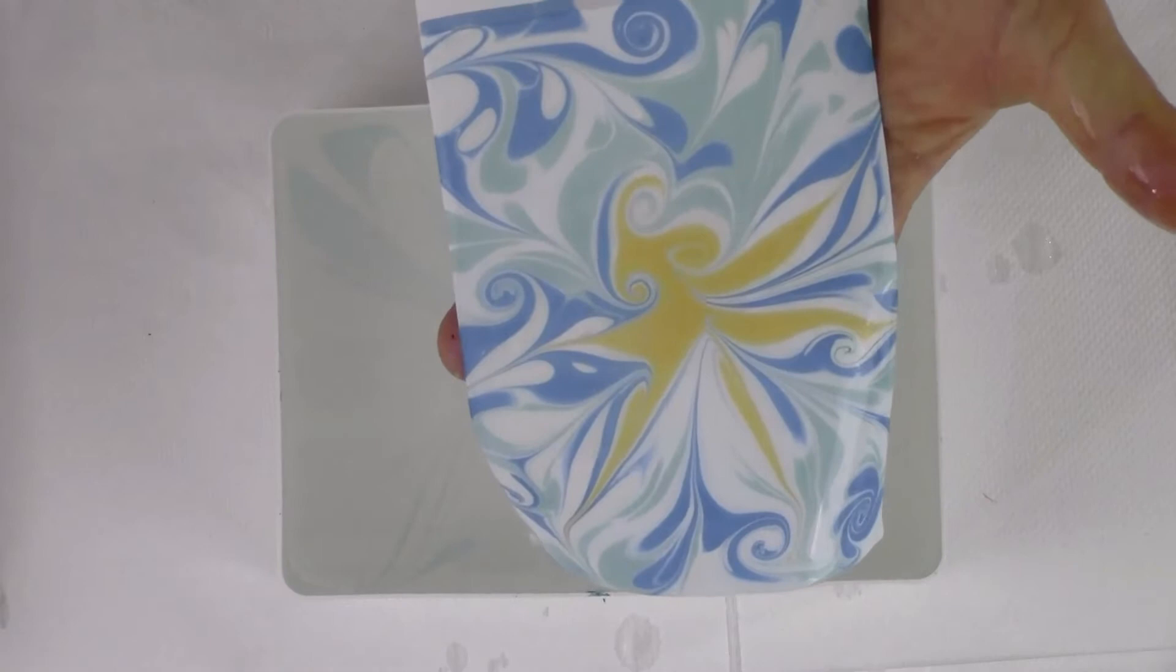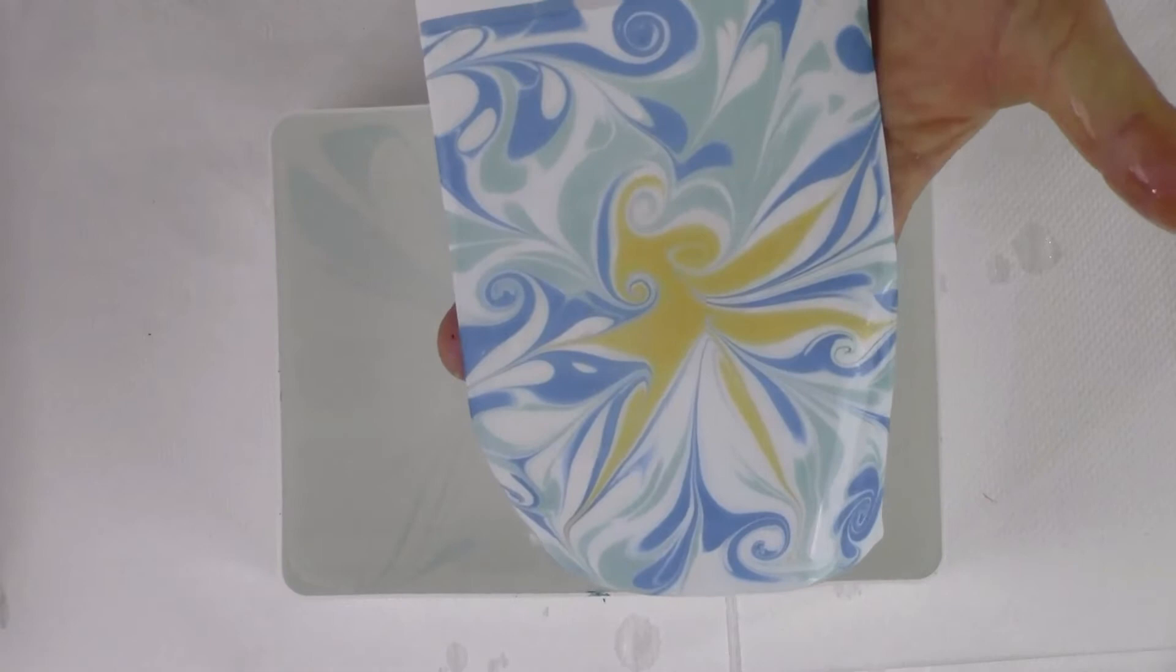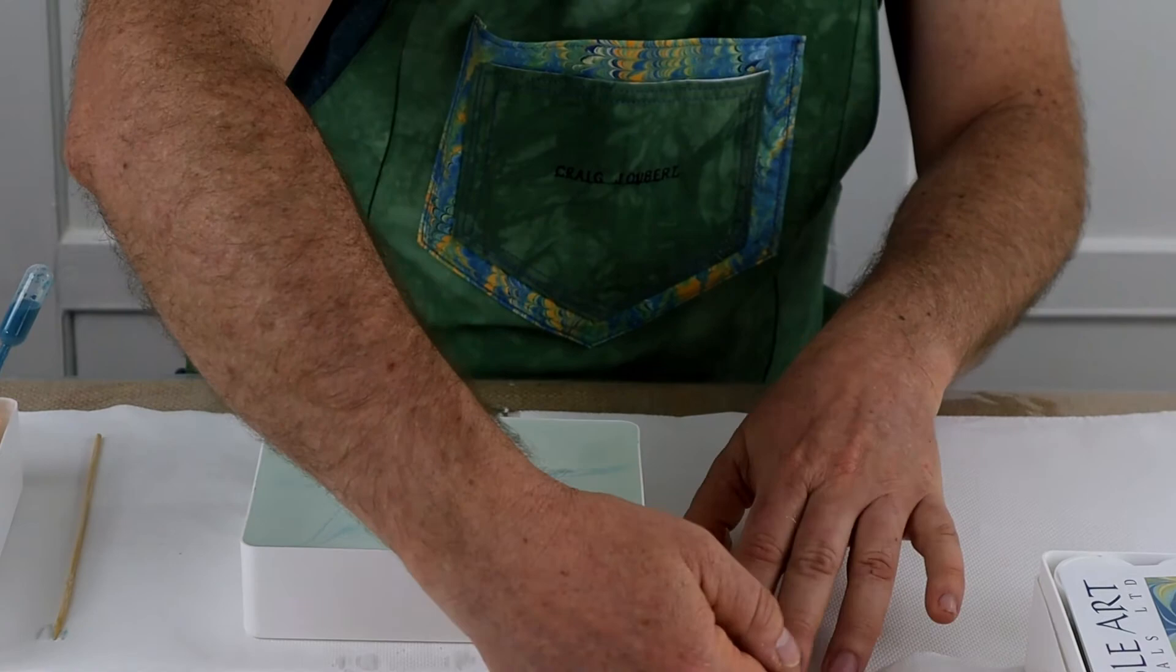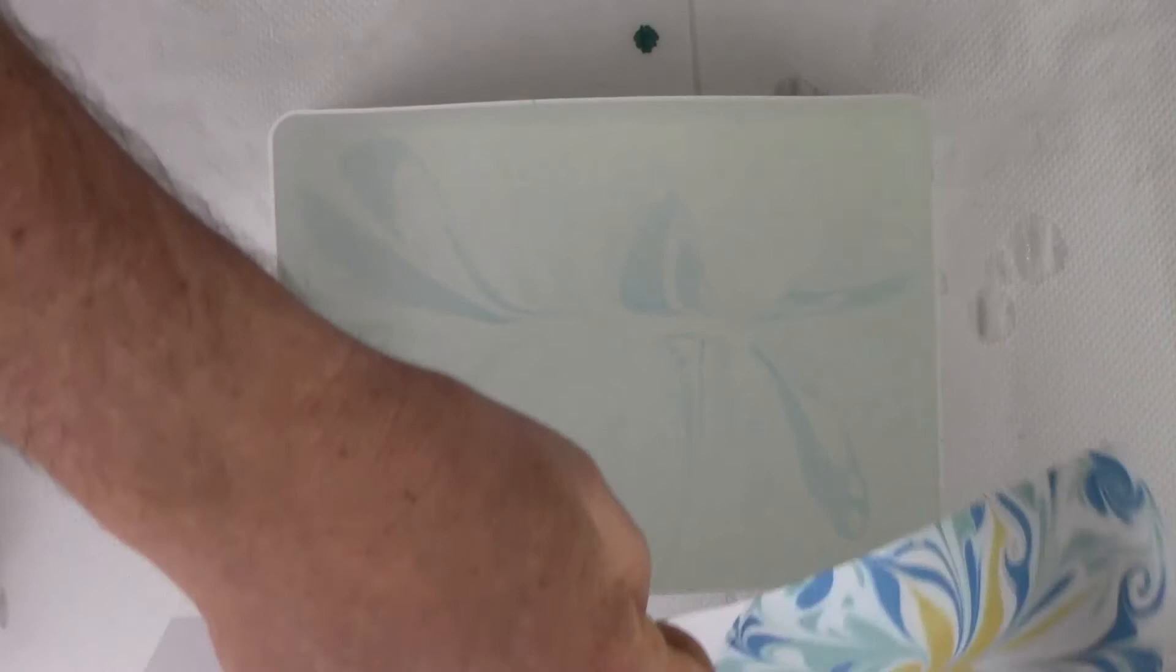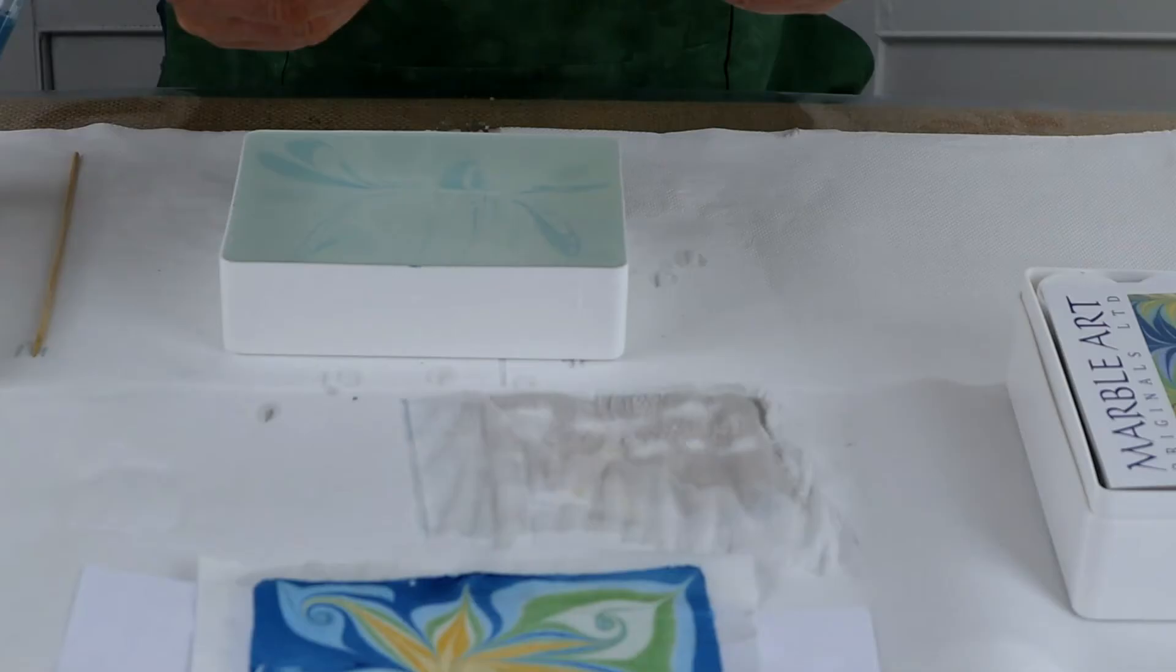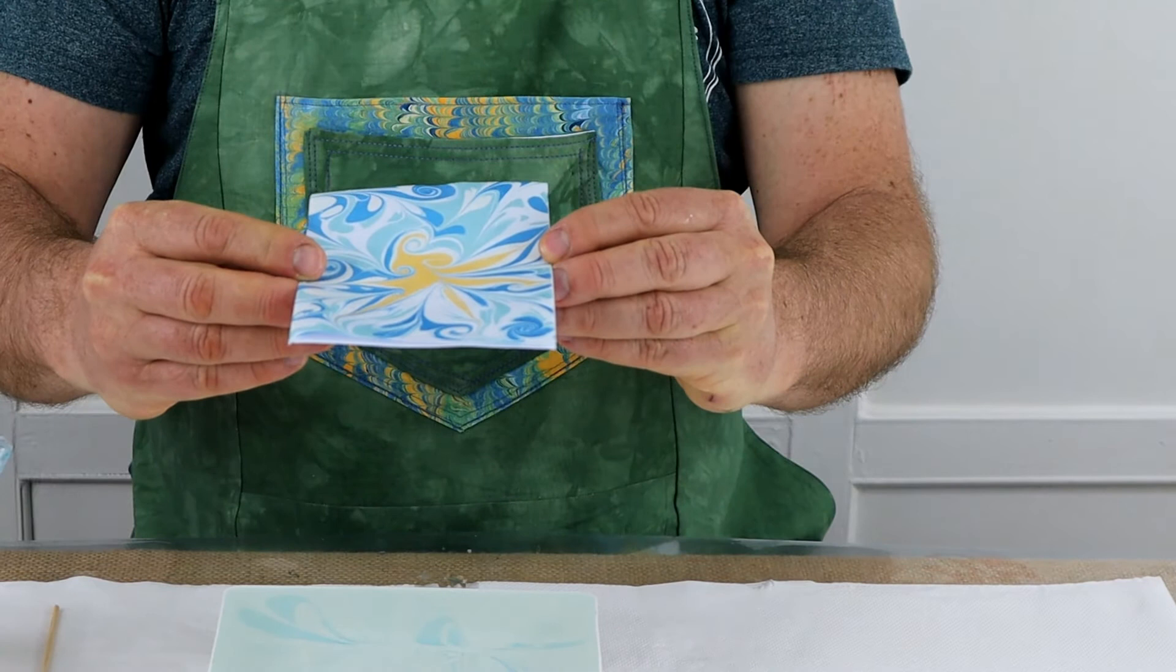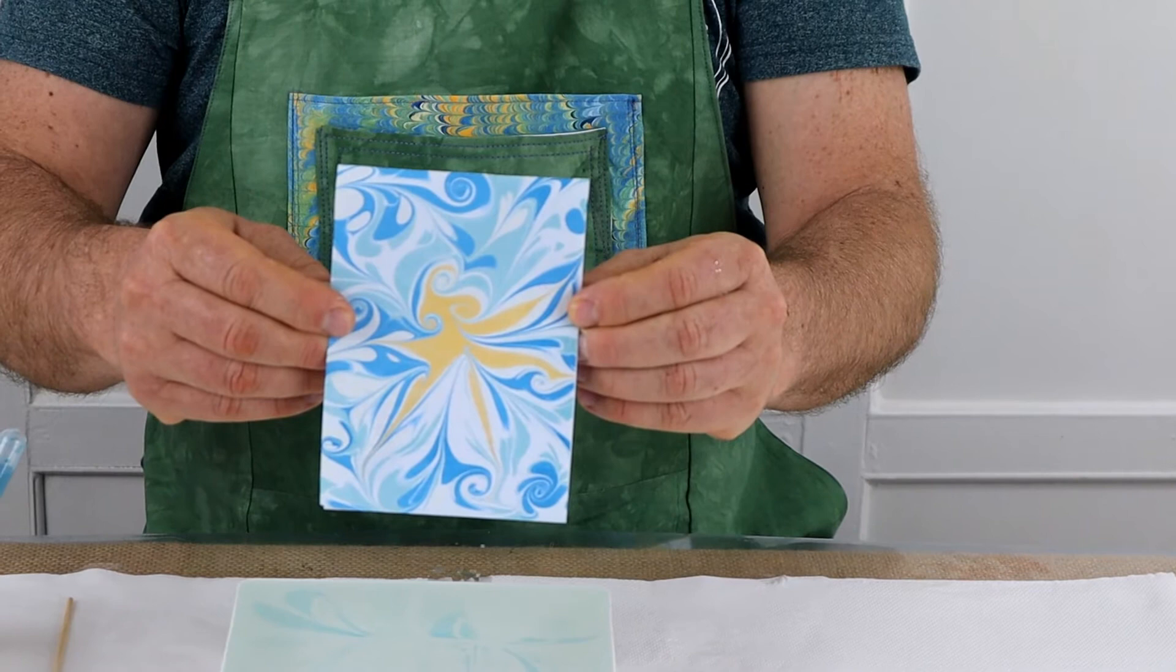So all we need to do is simply put it down onto some kitchen towel to take off the water. And the print is already sealed into that piece of paper within a second. So that's paper marbling. The colors are stunning. Absolutely stunning.